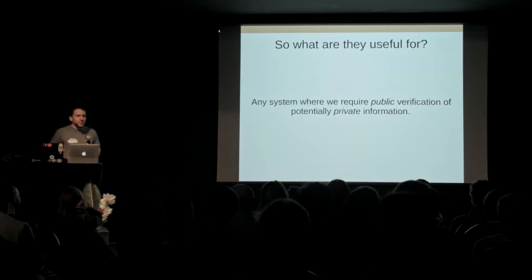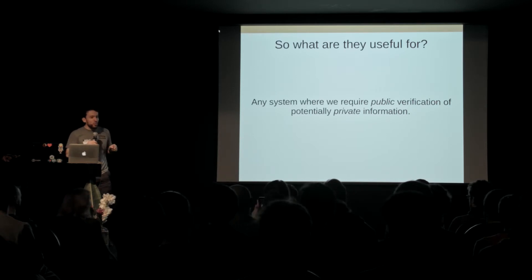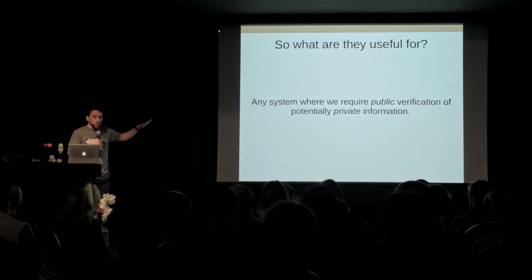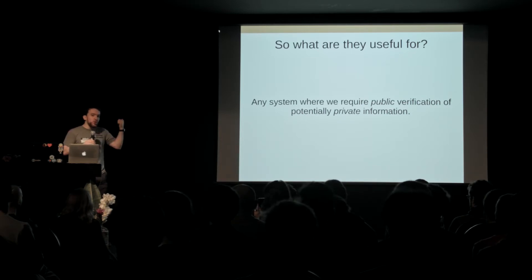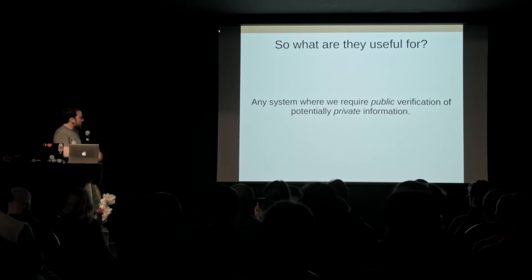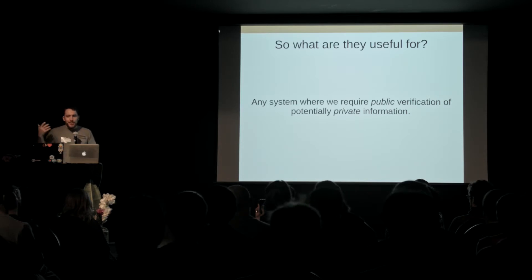So what are these things actually useful for? There's a really cool result showing that if you have any zero-knowledge proving system — like the billiard balls example — you can convert it into any other zero-knowledge proving system. It's really inefficient, but you could use it to prove anything. The best use cases are where you have private information that you also want publicly verified.